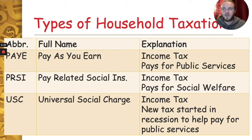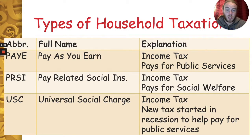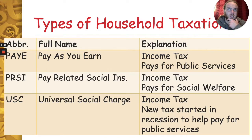Examples of PRSI-funded payments include jobseeker's benefit, jobseeker's allowance, child benefits, rent allowance, and family income supplement. The Universal Social Charge, USC, was brought in during the big recession here in Ireland around 2008 to 2010 — it's basically to bring in more money for the government and is also used to pay for public services.